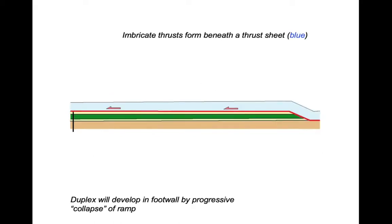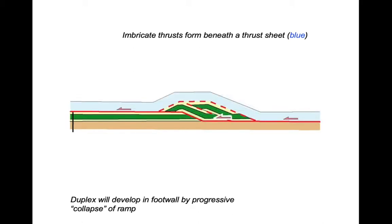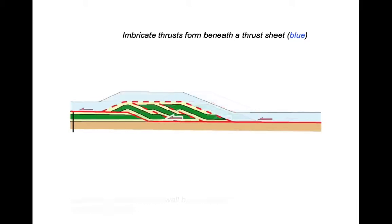So let's see how this works. We've got our thrust sheet running over the top, and at this stage the underlying strata have yet to thrust. So we grow a new thrust and move it. Grow a new thrust and move that. Grow a new thrust and move that. And so it can continue.